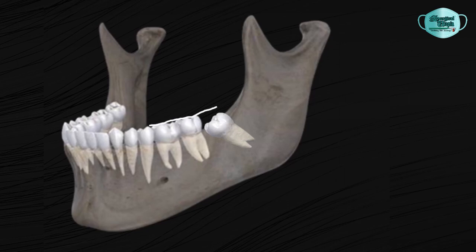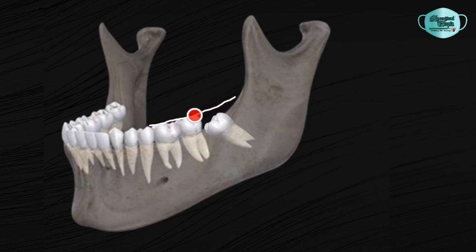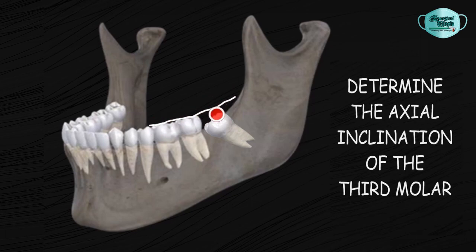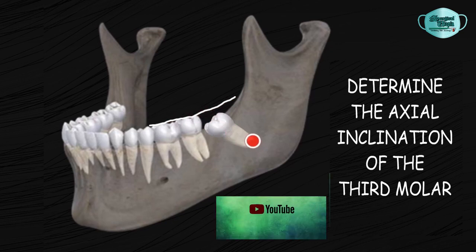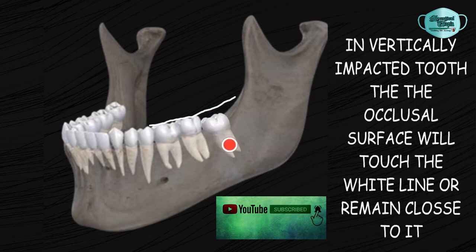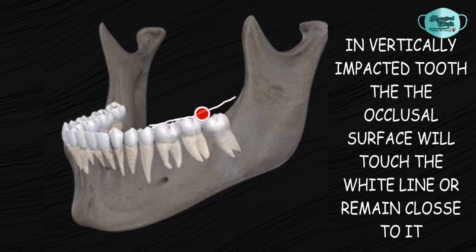The W in WAR lines stands for White line. This line is marked along the occlusal surface of the erupted teeth — the first and second molars — and it extends backwards above the impacted tooth or the third molar region. The white line helps in determining the axial inclination of the third molar. If the impacted tooth is vertically impacted, the occlusal surface will either touch the white line or remain parallel to it.